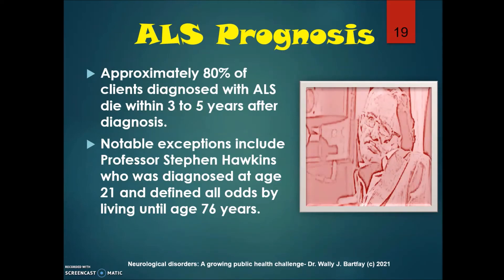Regarding ALS prognosis, approximately 80 percent of clients diagnosed with ALS die within three to five years after diagnosis. Some notable exceptions include Professor Stephen Hawking, who was diagnosed at age 21 and defied all odds by living until the age of 76.